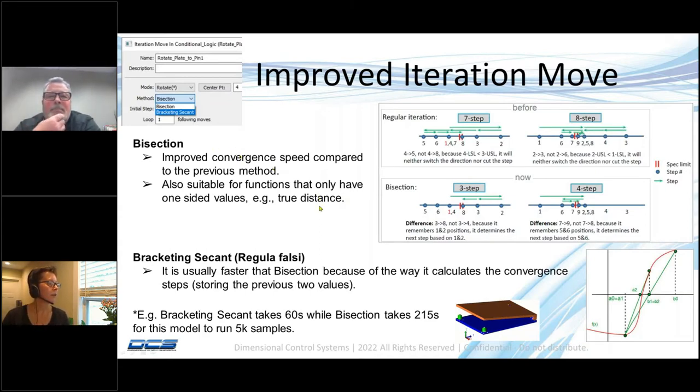Sometimes bisection is not as fast as you want, so we added another option. This one was under a user DLL and we brought it in here: the bracketing secant, or Regula Falsi. It uses a different calculation than bisection because it's looking not only at the x-axis, but also at the deviations of the points in the y direction. So it stores more information to be used in the next steps.